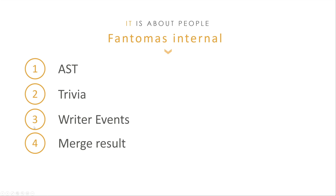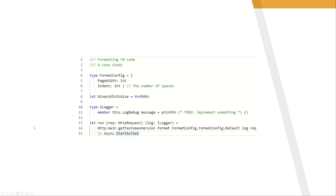There are four main building blocks when transforming source code to formatted code. First is the creation of the abstract syntax tree. Then we collect some trivia, and we map both of those things back to writer events. Once we have those events, we can merge it back to valid F# code. It doesn't necessarily happen exactly in this order, but you'll get the main gist of it. Let's take a following example and see how those main concepts look. While we developed Fantomas, we found it useful to create a tool that visualizes different parts of the process. It helps us when we debug issues and identify in which phase something went wrong.